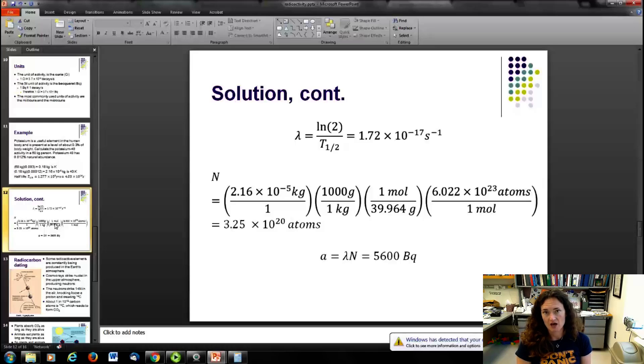And then all that's left is to solve for the activity by multiplying the number of atoms by the decay constant, and if I do that, I get 5,600, which would be, in terms of activity units, Becquerels. So 5,600 Becquerels. All right, so that's the first example.